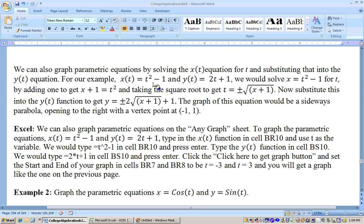For example, if we solve x(t) equals t squared minus 1, and y(t) equals 2t plus 1, then we would solve the x one, x equals t squared minus 1 for t. If you do that, you would add 1 and get t squared equals x plus 1, and then take the square root of both sides. When you take the square root of t squared, you actually get the absolute value of t, which would actually be plus or minus the square root of x plus 1.